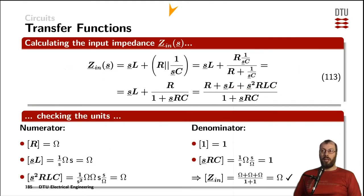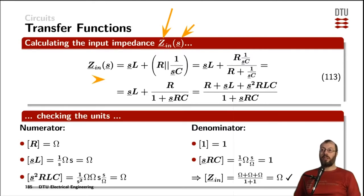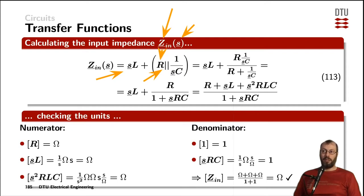Starting with the input impedance as a function of the complex frequency S, the first thing we see when we look into the circuit is an inductor in series with the rest of the circuit. The rest of the circuit is a resistor in parallel with the capacitor. We write the resistance as its impedance and the capacitor as its impedance, since the final thing we are interested in is an impedance.